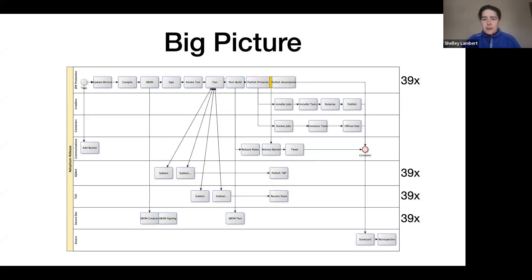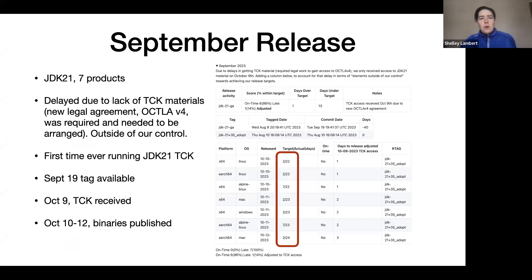So first of all, going to our September release, that release is JDK 21. In that release we ended up publishing seven products, I'll call them, so that's seven different platforms on that version. And if you look at our scorecards as you see it, the straight up value would show that we were late, we were over three weeks late to deliver this.